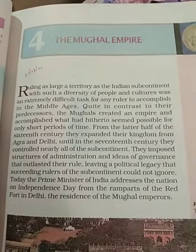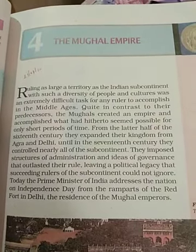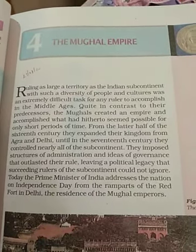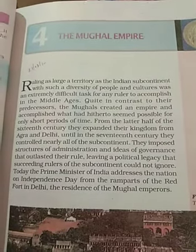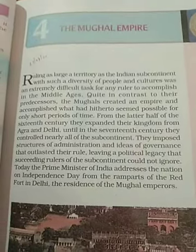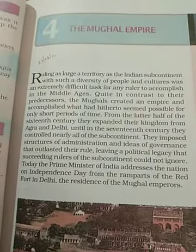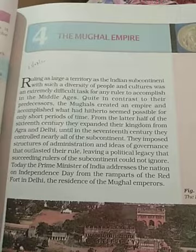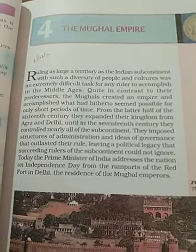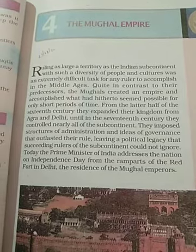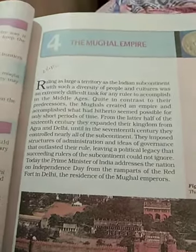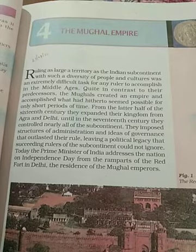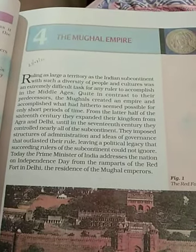In the Middle Ages, quite in contrast to their predecessors, the Mughals created an empire and accomplished what had previously seemed possible for only a short period of time. In a very short time, the Mughals started to rule half of the Indian parts. From the later half of the 16th century, they expanded their kingdom from Agra to Delhi. Until the 17th century, they controlled nearly all of the subcontinent, imposing structures of administration and ideas of governance that outlasted their rulers, leaving a political legacy that succeeding rulers of the subcontinent could not ignore.